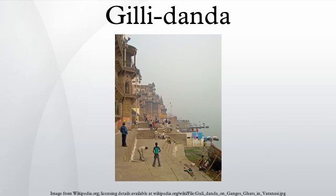Ghillie dander is an ancient sport of India, possibly with origins over 2,500 years ago. It is believed to be the origin of Western games such as cricket, baseball and softball.